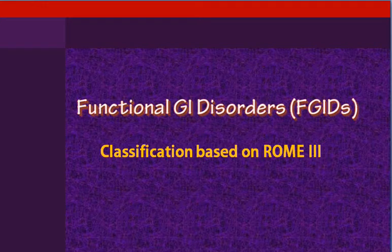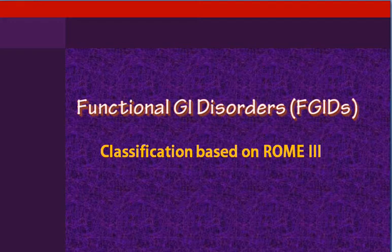Functional gastrointestinal disorders are not one single entity. They are a group of functional disorders affecting the GI tract right from the mouth up to the anal canal. These are classified in a systematic way, and we will here adopt the ROM III classification of these disorders. Let us see the detailed classification before we go on to specific functional conditions of the bowel.